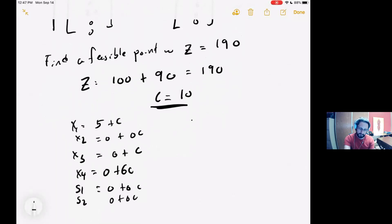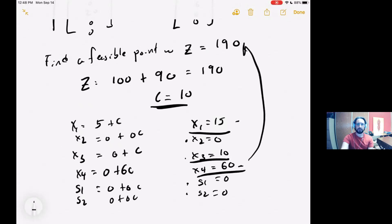Plugging in C equals 10 gives me X1 equals 15, X2 equals 0, X3 equals 10, X4 equals 60, and S1 and S2 equal to 0. Notice these three values were the initial non-basic variables. They stayed non-basic variables, while X3 was the quantity that we were increasing, which caused X1 and X4 to increase as well. These three values as basic variables generate Z equals 190 as an objective function value.